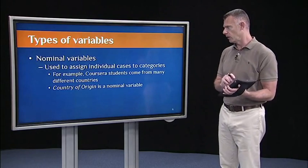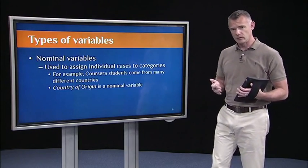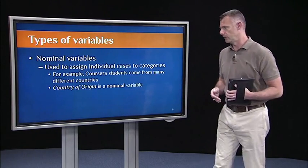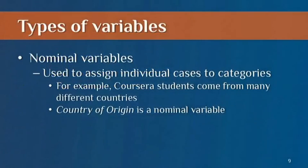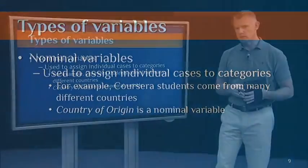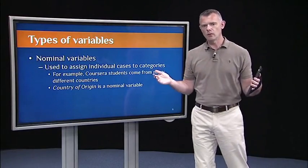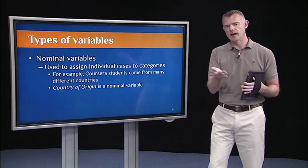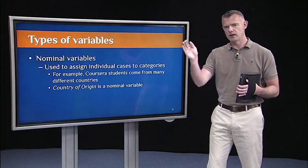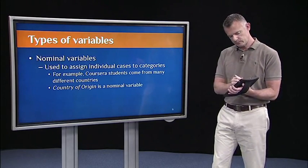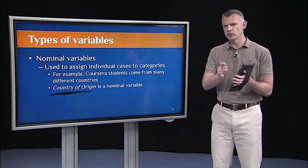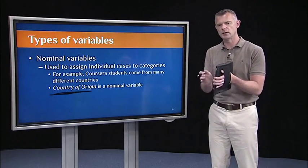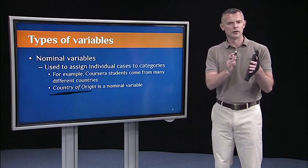So let's start with the simplest type of variable, a nominal variable. A nominal variable literally means to name types of instances of variables. Is to just assign individual cases to categories. So for example, the Coursera students that are out there, that are watching statistics one, they come from countries all over the world. So your country of origin is a nominal variable. It's just assigning individuals to distinguish some students from others. So there are some students from Brazil, some students from Argentina, some from Australia, India, the US, and so on.